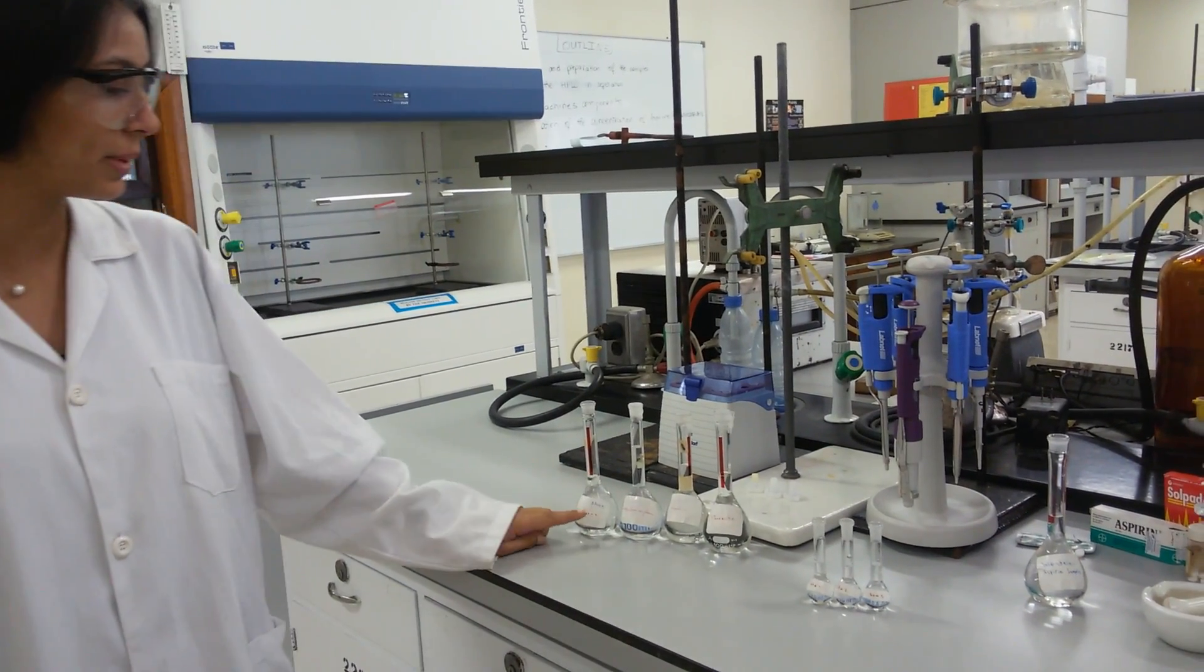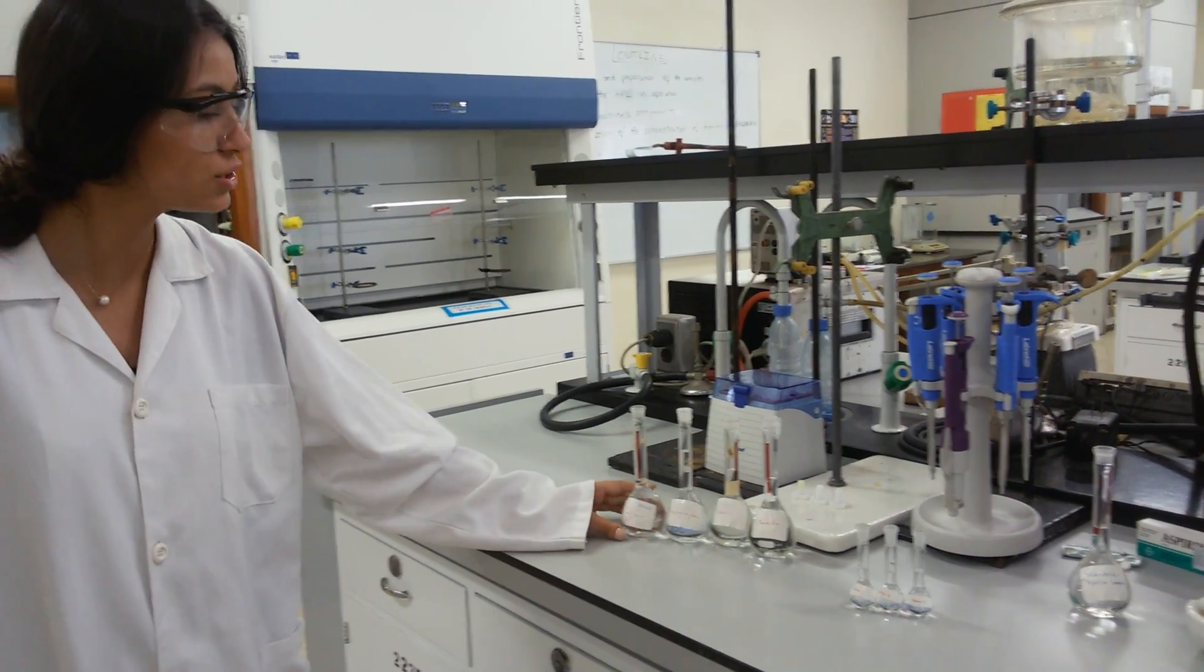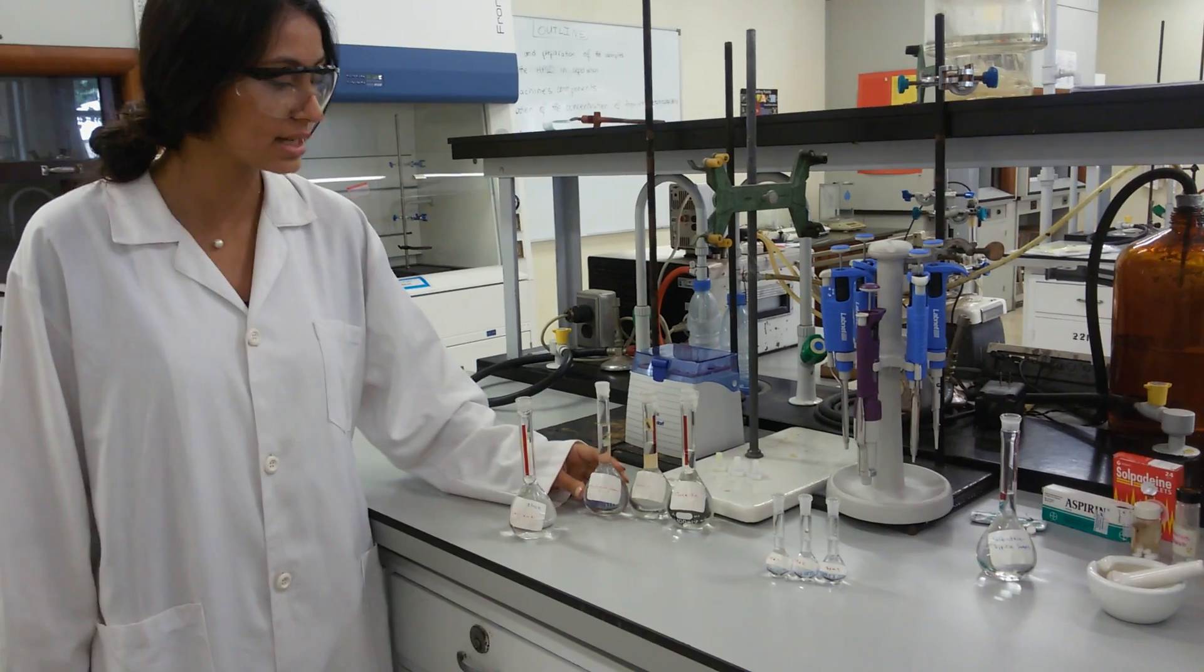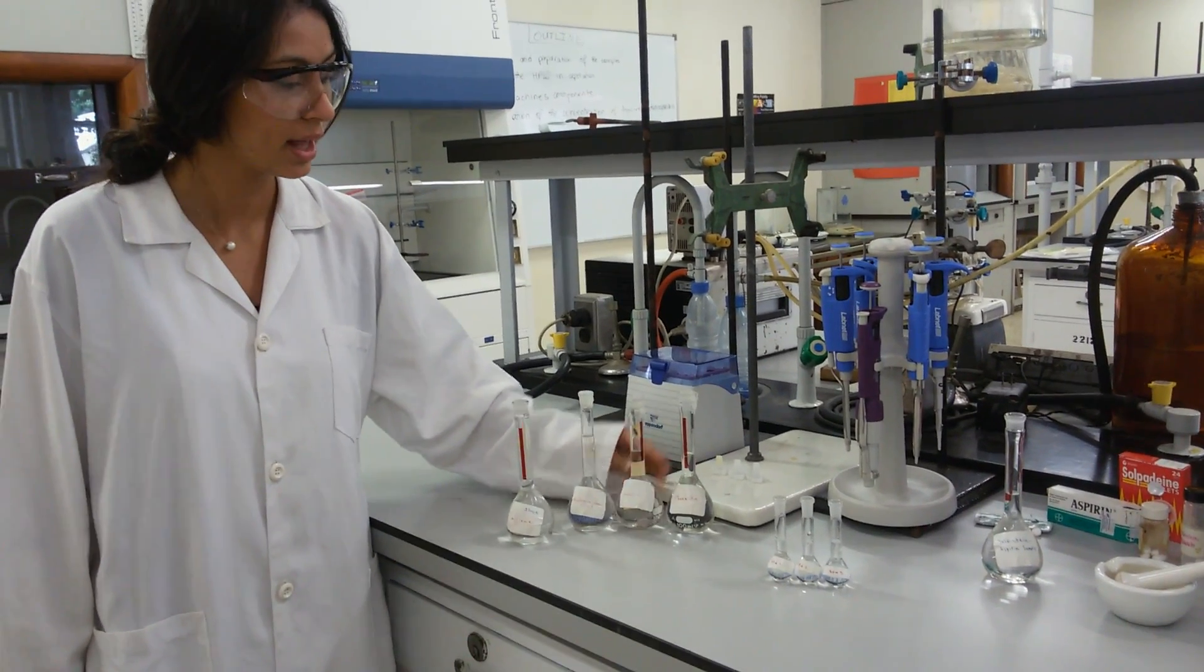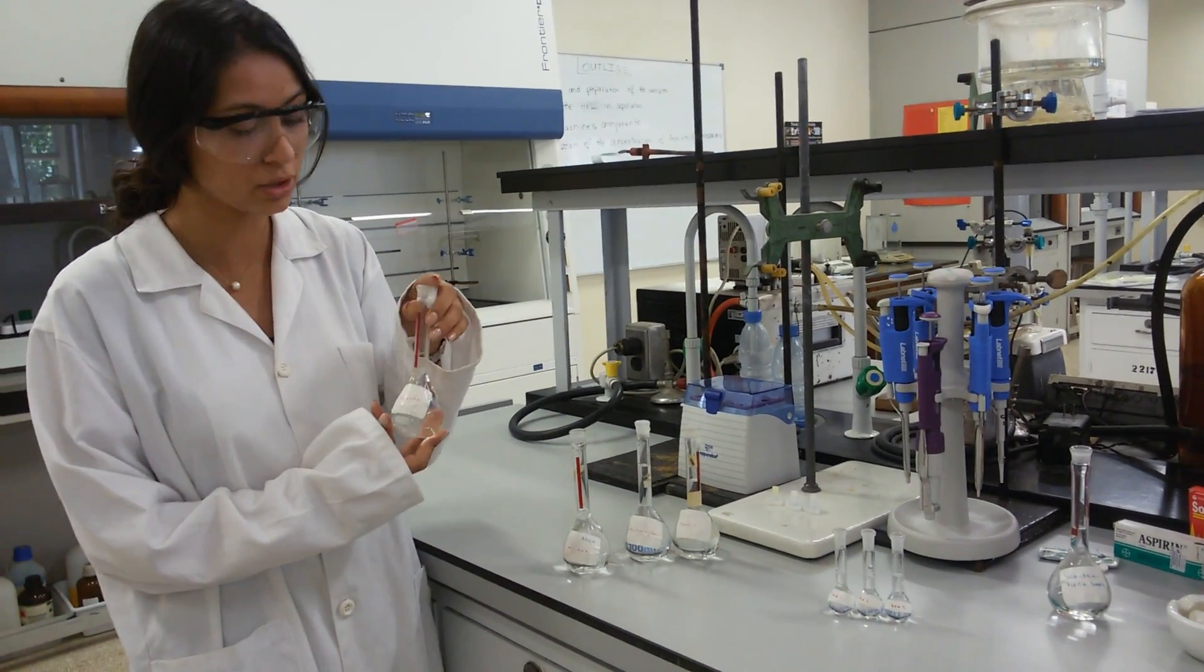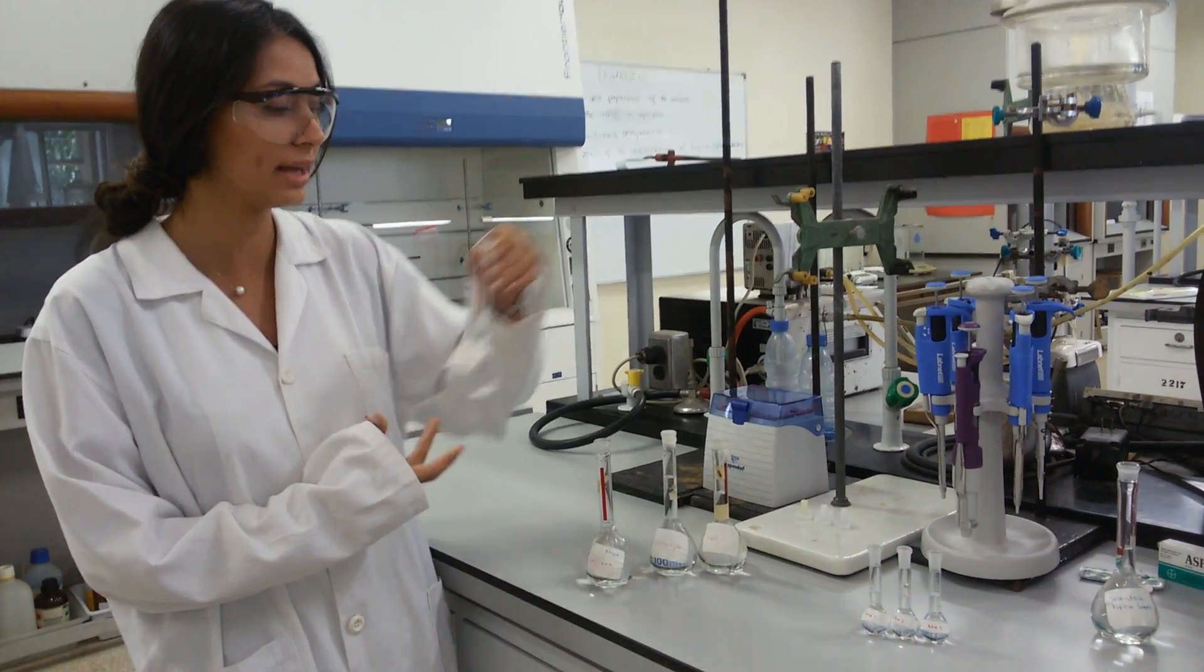First of all, we will start by preparing four stock solutions, each containing one of the four active ingredients: caffeine, acetaminophen, aspirin and phenacetine. During this experiment we will be using phenacetine as an internal standard in order to correct the errors.